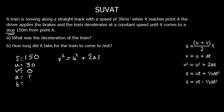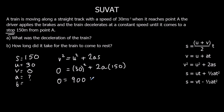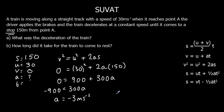Using V squared equals U squared plus 2AS: zero squared equals 30 squared plus 2 times A times 150. So 0 equals 900 plus 300A. Taking 900 off both sides gives negative 900 equals 300A. Dividing by 300, A is negative 3 meters per second squared. So the deceleration is 3 meters per second squared.